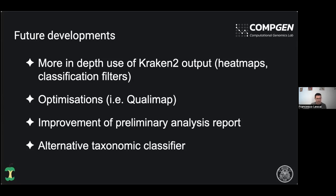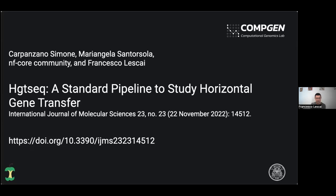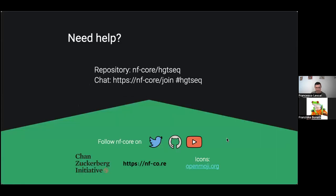I hope this is enough of an overview for now. We have published a paper in the International Journal of Molecular Sciences very recently, where the NFCore community is a collective author. There you can find more details, particularly about the scientific findings we have collected by analyzing the different species used for testing the pipeline. I'm open to take any questions.